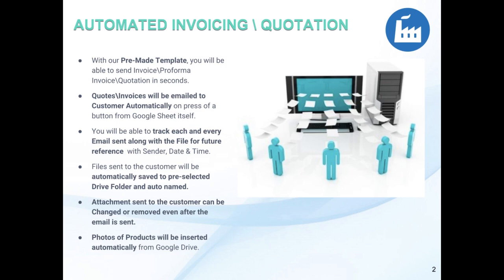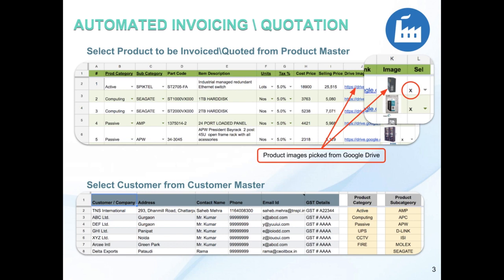Let me show you how exactly the script will help you. This is the script containing the product master where you can input the details of all the items you have — product category, subcategory, part codes, item description — and you can also include images. You can upload all the images to a folder in Google Drive and they are displayed automatically.